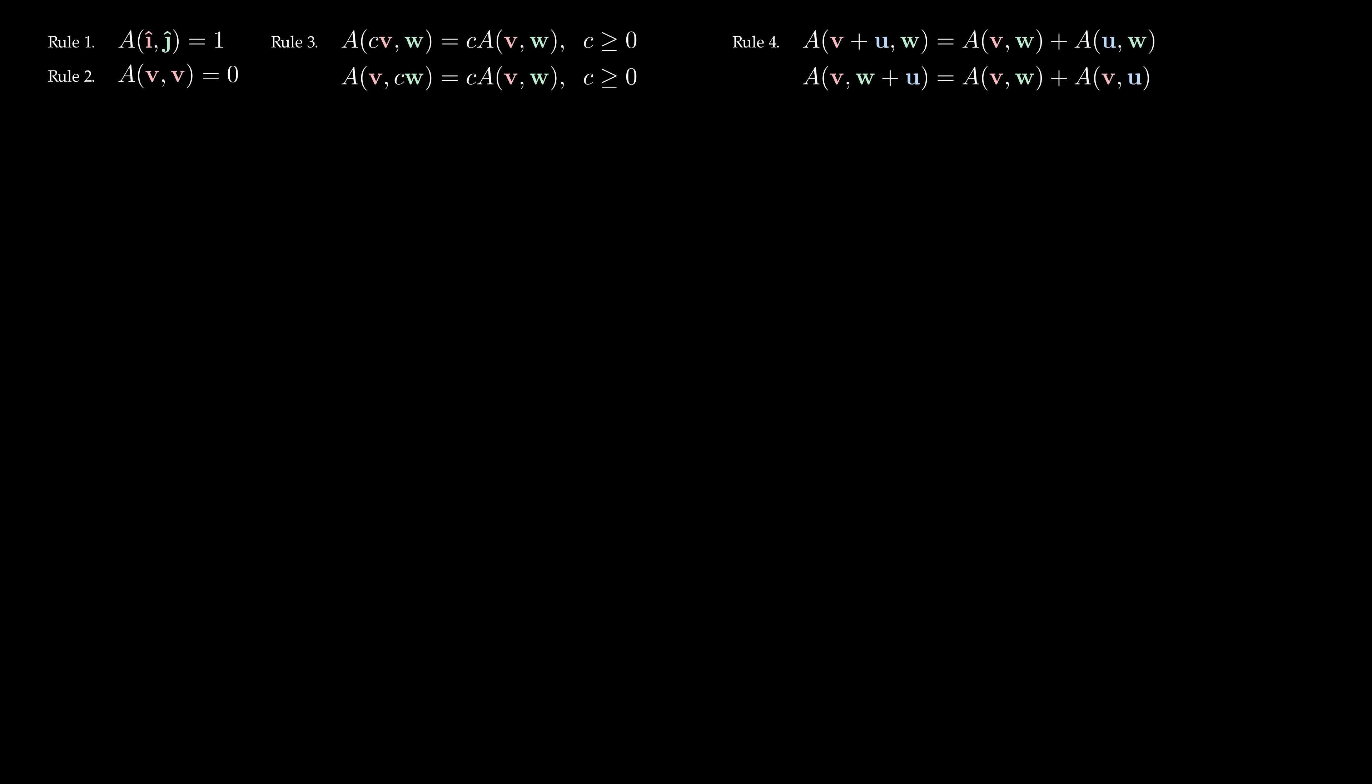However, this new rule isn't as innocent as it seems. Suppose we set u to be minus v in rule 4. Then, v plus u becomes v plus minus v, which becomes zero.